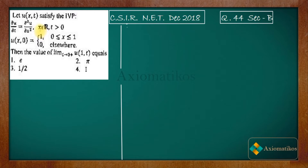The problem here is that x belongs to ℝ. The second problem is that u(x,0), the initial condition, is not a continuous function — it's a discontinuous function. It is defined piecewise: on [0,1] it is defined separately, and otherwise it is 0. So that creates a problem because you may not have encountered this kind of setup in your courses.